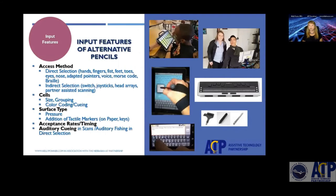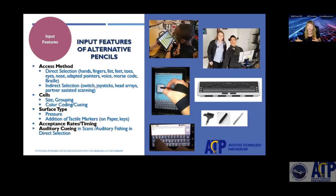Looking more closely at input features, we look at access method. Is it a direct selection method, where people are directly typing on keyboards or using swipe commands? They might be using an alternative stylus held in their mouth or a head array to move around an on-screen keyboard. Other input considerations include the size of the keys, how they're grouped, whether color is used to distinguish vowels from consonants, how much pressure is required, and how much movement occurs before another key is typed.